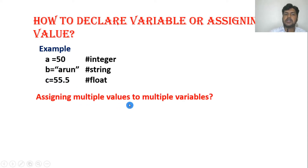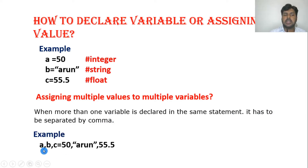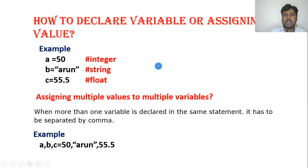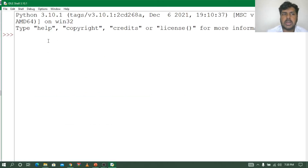Let us see assigning multiple values to multiple variables. When more than one variable is declared in a statement, they have to be separated by a comma. Let us see how we can declare and assign a value to a variable.